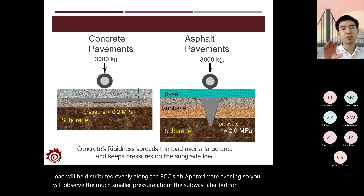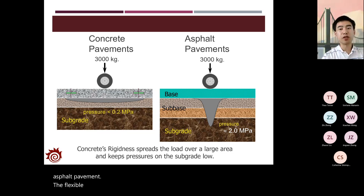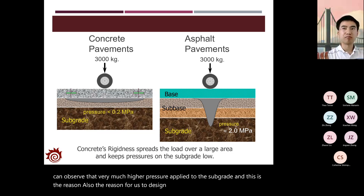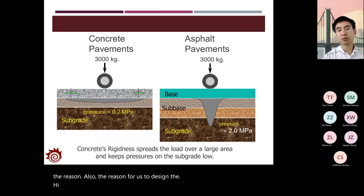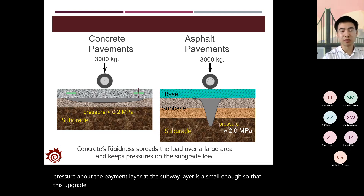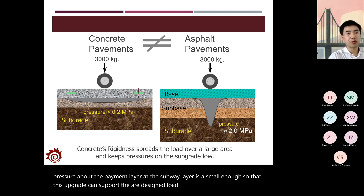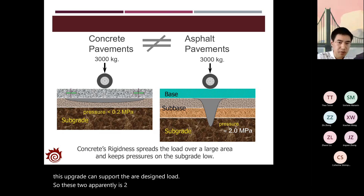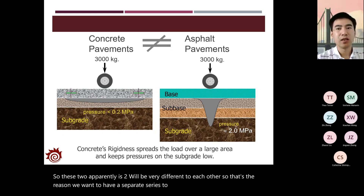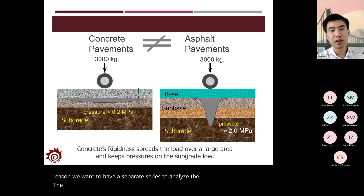For flexible asphalt pavements, the stress distribution is more concentrated, resulting in much higher pressure applied to the subgrade. This is why we design greater thickness for flexible pavements—to ensure the pressure above the subgrade layer is small enough for the subgrade to support the designed load. Because these two types are very different, we analyze stress and strain for rigid and flexible pavements separately.